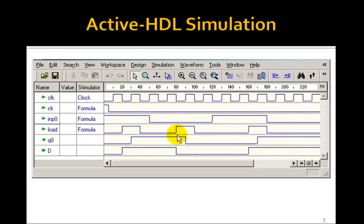And Q0 stays 1 until load goes high again. Then on this rising edge of the clock, input 0 is now 0. So Q0 now goes to 0. And it will stay 0 even though input 0 changes because load has gone low. So not until load goes to 1 again. Then on this rising edge of the clock, input 0 is 1, so Q0 goes back to 1.